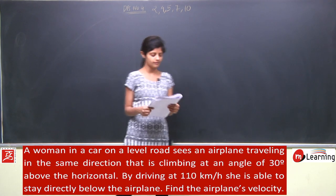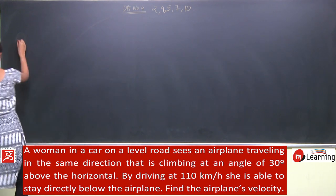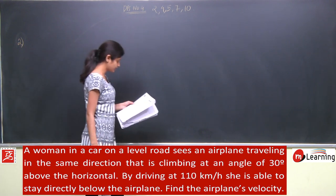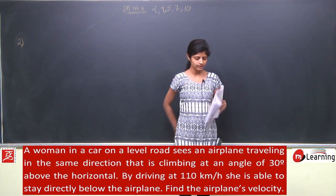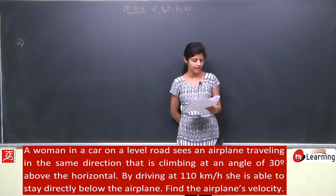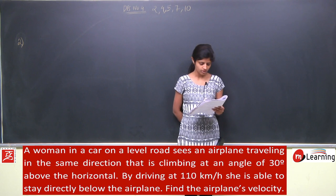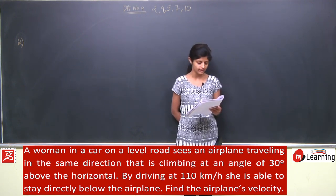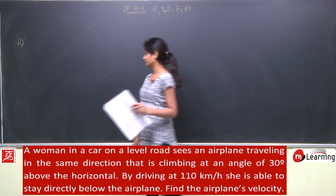Hello everyone. Today we will discuss GPS number 4 and we will start with question number 2. A woman in a car on a level road sees an airplane traveling in the same direction that is climbing at an angle of 30 degrees above the horizontal. By driving at 110 km per hour she is able to stay directly below the airplane. Find the airplane's velocity.